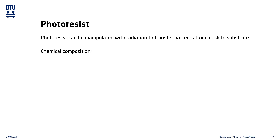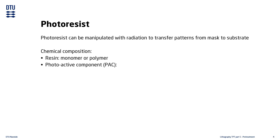In broad terms, the photoresist consists of three main components: a resin, a photoactive component, and a solvent. The resin is some type of monomer or polymer. The photoactive component, or PAC, is the component that interacts with photons and causes the actual chemical change in the resist.